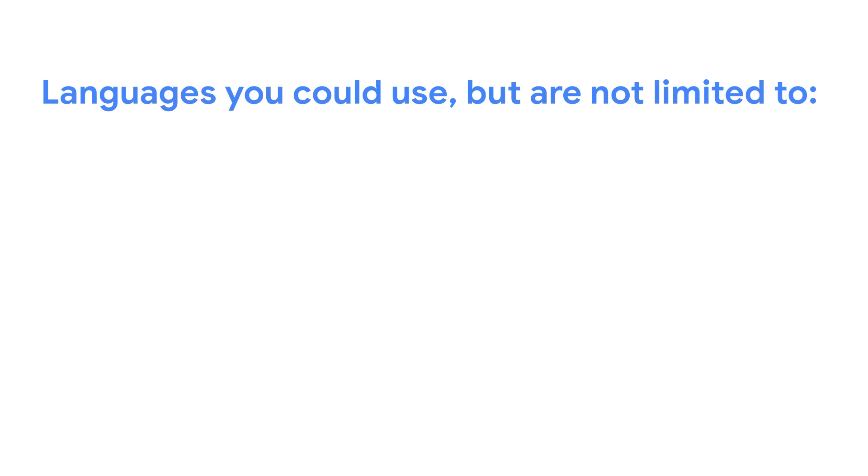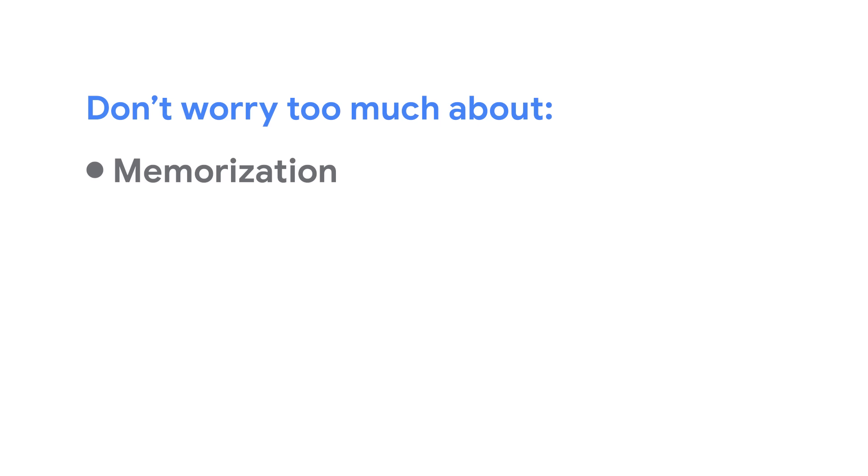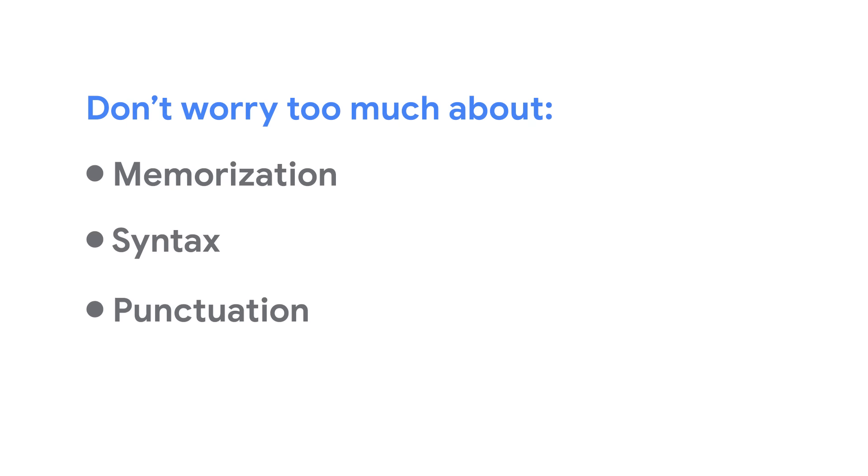Candidates will be expected to write idiomatic code in a programming language and style they are comfortable with. Common languages candidates choose include C++, Java, Python, JavaScript, or Go. Choose the language you're comfortable with — we are evaluating you on conceptual understanding. And we know that if you are fluent in one programming language, you could learn another. We're also not trying to confuse you with language trivia, so don't worry too much about memorization, syntax, or punctuation. We want the substance of your code to shine through.